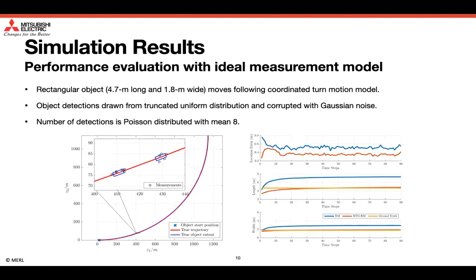In the simulation study, we first consider the evaluation of the proposed method with ideal measurement model. In the considered scenario, a rectangular object moves following according to the motion model, and the object detections are randomly drawn from a truncated uniform distribution corrupted with Gaussian noise, and the number of detections is Poisson distributed with mean 8. See the snapshot shown in the figure on the left.